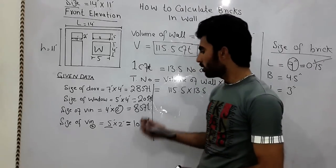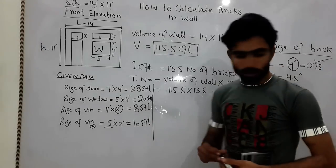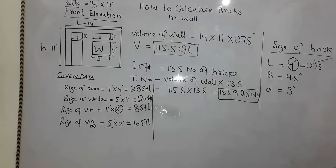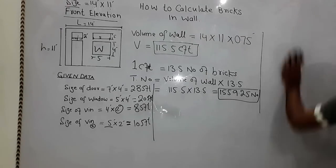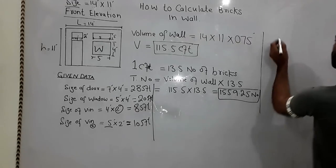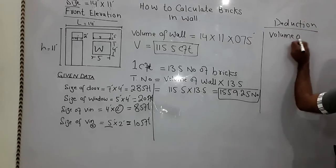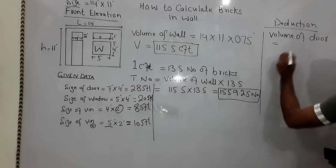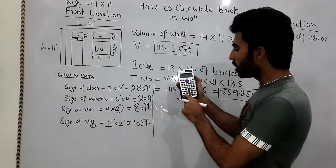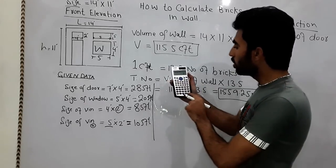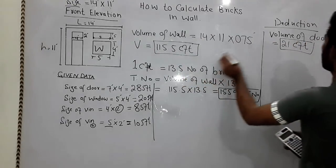Now I will find the volume for all of these deductions. Volume of door: 28 square feet × 0.75 (thickness of wall) = 21 cubic feet. So the volume of the door opening is 21 cubic feet.